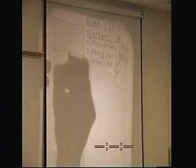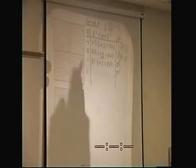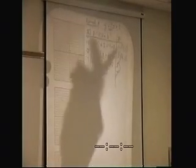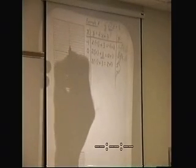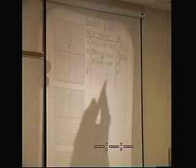We can graph these points. Negative 1, 1. 0, 3. I can't count today. 0, 3. 1, 5. And 2, 7.